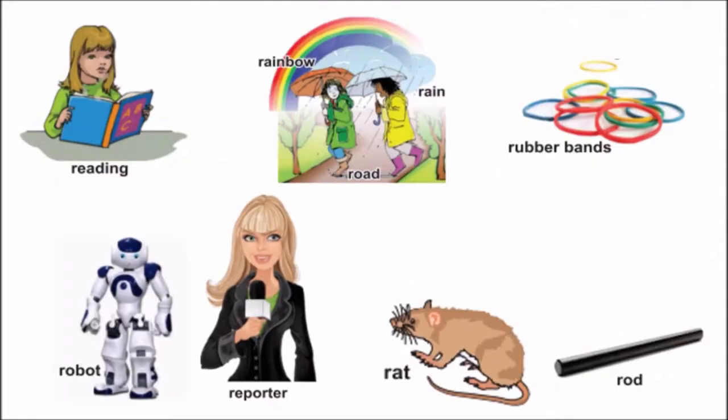Now it's time for you children to look for letter R in all the words. Let us start with the first word. Can you find? Yes. R, R, reading. R, R, reading. R is the first sound. Let us go to the next word.